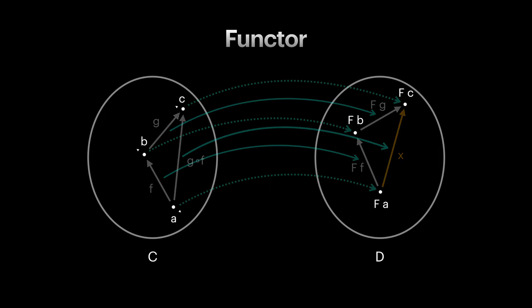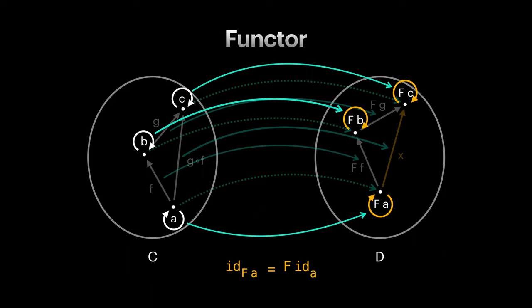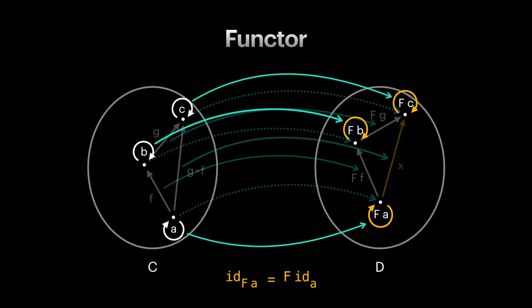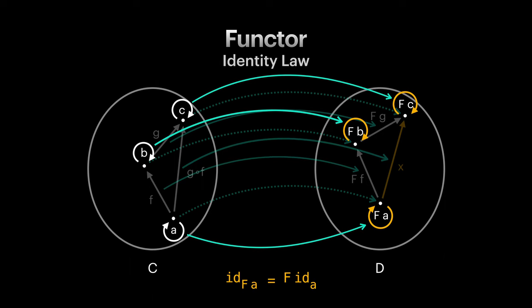We still haven't talked about the identity arrows when it comes to functors. In functors, identity of a lifted object in the target category should be same as lifting the identity arrow from the source category. And this is called functor identity law.